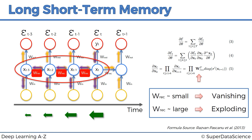This creates a domino effect because the far-left layers' weights are very important — they dictate the inputs to the far-right layers, and the whole training suffers. That is the vanishing gradient problem. As a rule of thumb: if WREC is small, we have vanishing gradient; if WREC is large, we have exploding gradient. Solutions include clipping the gradient for exploding gradients, smartly selecting weights via echo state networks for vanishing gradients, and LSTMs.